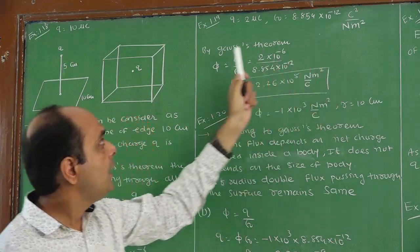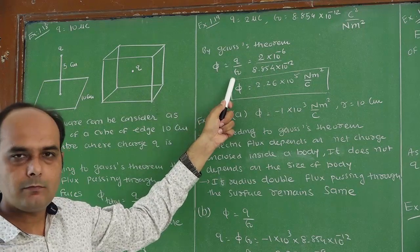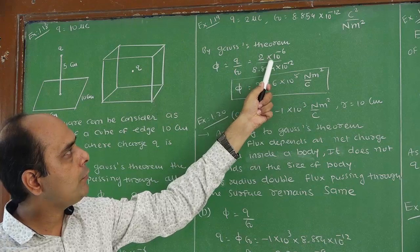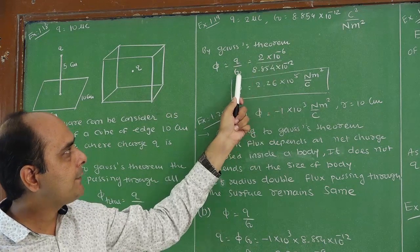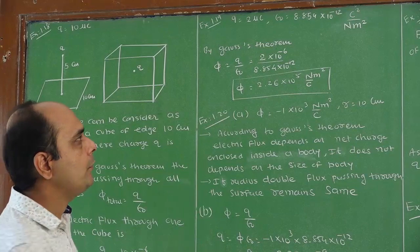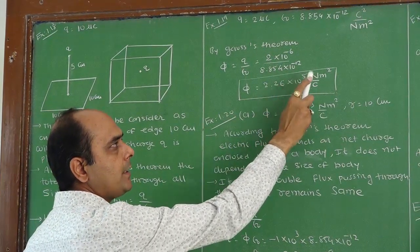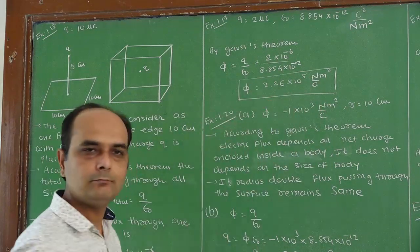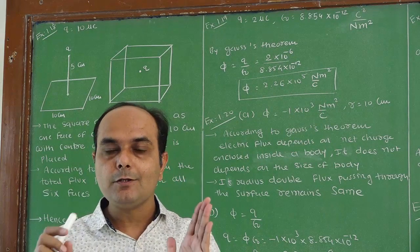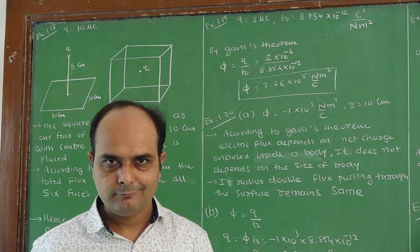By Gauss theorem, flux Φ = q by epsilon 0. Substituting values: q is 2 microcoulomb, that is 2 into 10 to the minus 6; epsilon 0 is 8.854 into 10 to the minus 12. By calculating, the answer will be 2.26 into 10 to the power 5 Newton meter square per coulomb. This is a very simple example — it is worth 1 mark, not 3 marks.